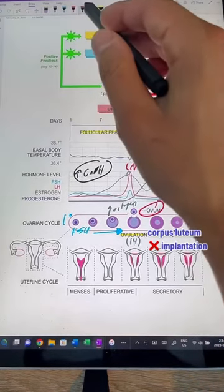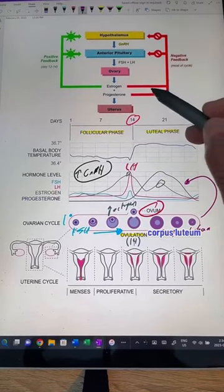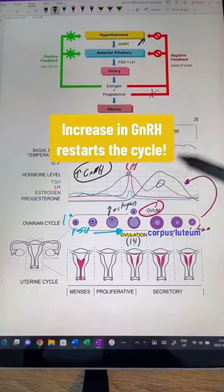If there's no implantation in the corpus luteum, it will degenerate, and all these hormones decrease. Progesterone can no longer inhibit our gonadotropin-releasing hormone, and so we get a new increase again, stimulating the cycle all again.